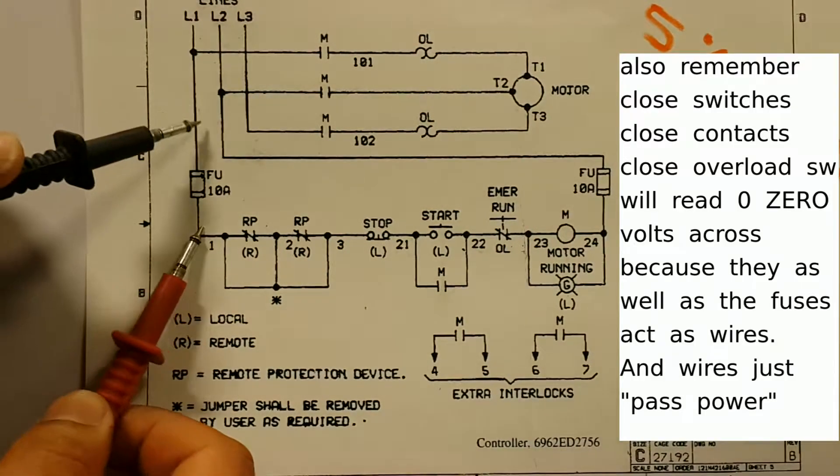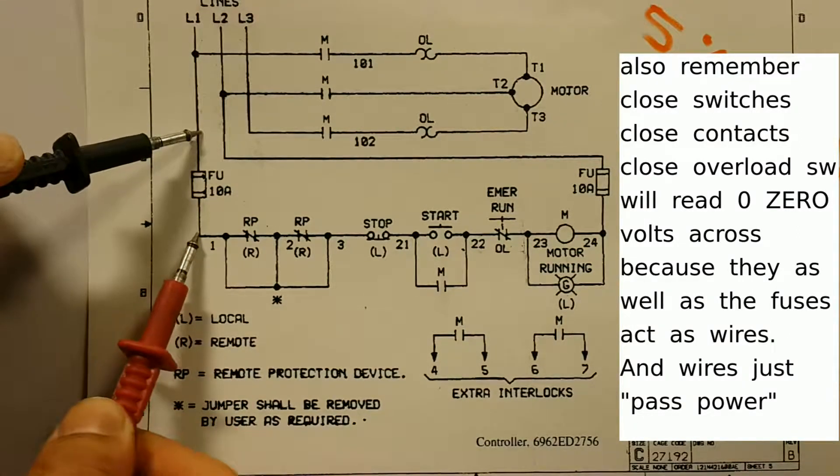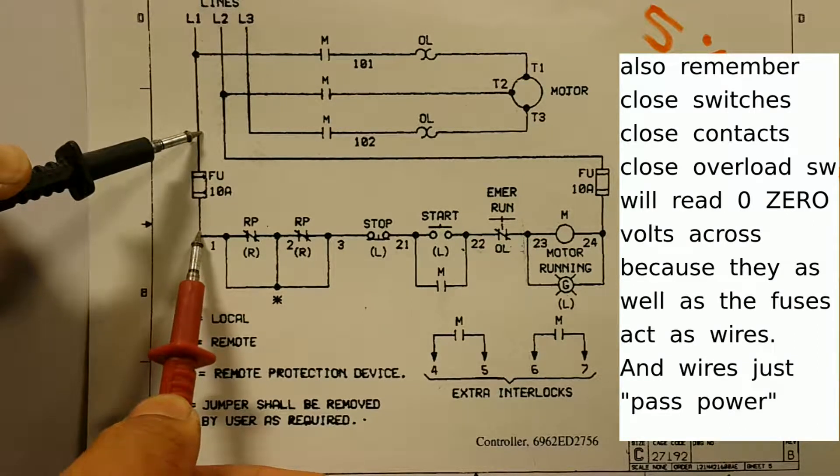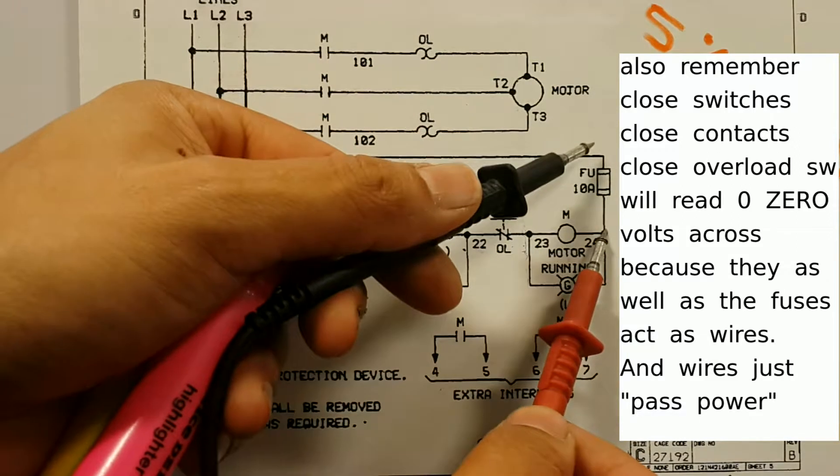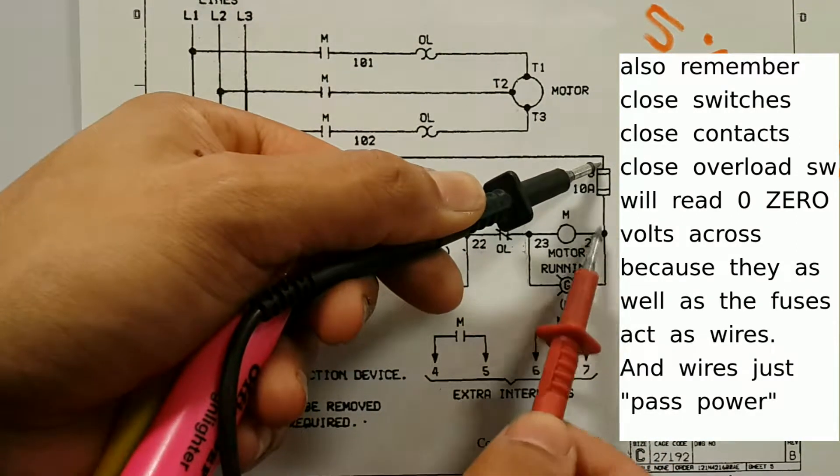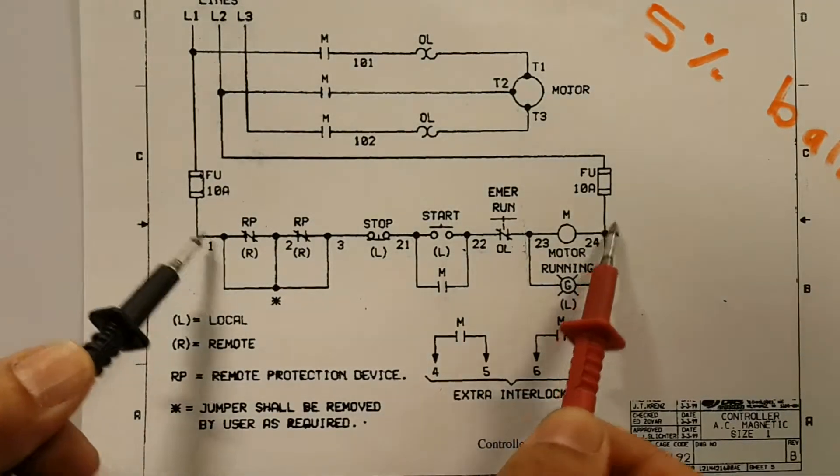For the fuses, if I go top to bottom, remember fuses are a piece of wire, so the difference of potential across a piece of wire is 0 volts. So I should have a perfect 0 volts when I go from 1 to L1, and I should also have 0 volts when I go from L3 to L2.